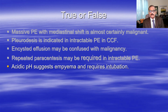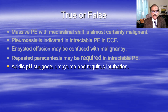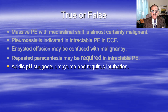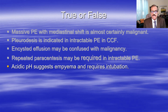Acidic pH suggests empyema and requires intubation. A frank empyema looks like pus so there is no confusion, but literature says if pleural fluid is acidic - pH less than 7, whereas normal body fluids are alkaline - that indicates invasion of the pleural space with bacteria. This is an indirect sign of bacterial invasion, and once there is evidence of that we treat it as empyema and chest intubation is indicated.